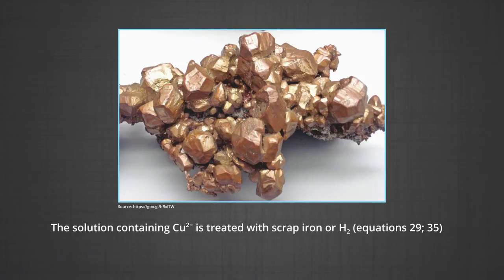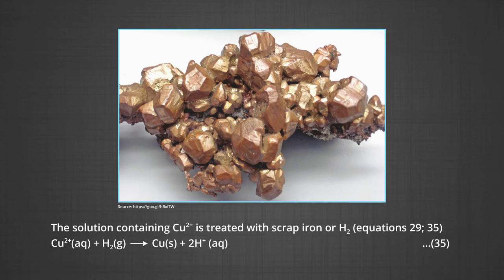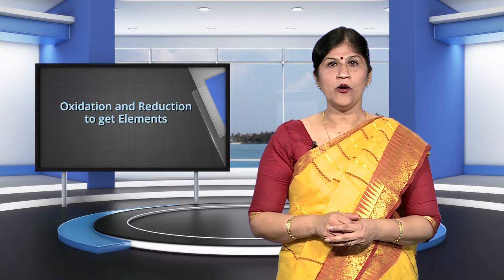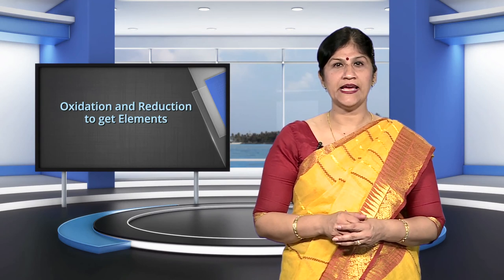Now let us understand another method, that is hydrometallurgy. Copper from low-grade ores and scrap copper is extracted by hydrometallurgy. It is leached out using acid or bacteria. The solution containing copper ions is treated with scrap iron or hydrogen. As seen in the equation: Cu²⁺ + Fe → Cu + Fe²⁺.